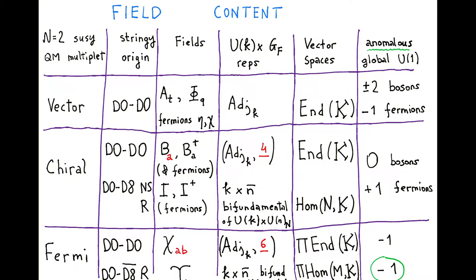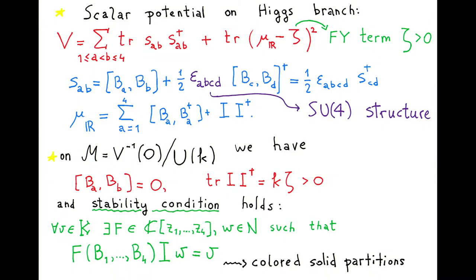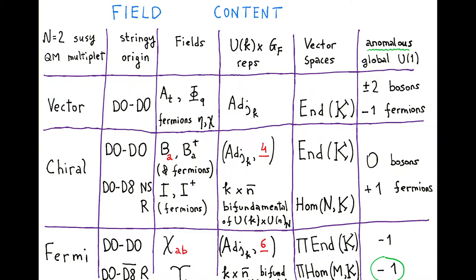The U(1) is the transverse one to the R^8 plane — these should be the correct charges of the fields. Going to the X branch means there will be a complexified connection, and we go to the branch where A_T plus phi is zero. Then we can read off the scalar potential, which will be positive and a sum of squares.